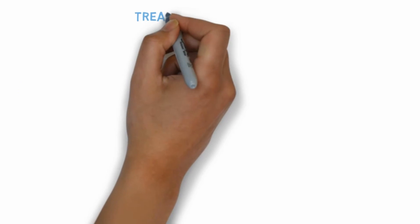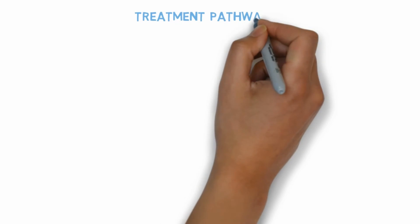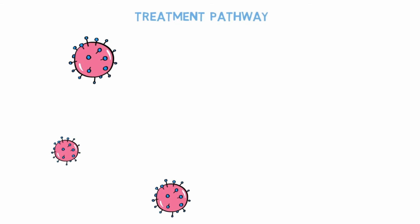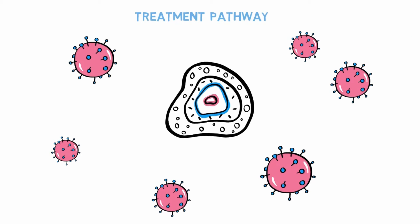In most cases the pathway to develop a treatment is as follows: 1. Find the cause of the disease. 2. Understand how this leads to the development of the disease. 3. Find a way to intervene to stop the disease developing — this is usually finding a protein that will respond to a drug.